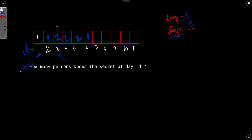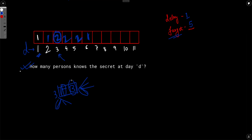At day 3, two people know the secret — call them A and B. Both will start sharing after delay days and keep sharing until they forget. Since they both learned on day 3, on day 4 two new people get the secret — one from A and one from B. So at day 4, four people total know the secret. Similarly, A and B share again on day 5, so four new people get the secret. On day 6, three new people know the secret, and on day 7, two new people know the secret.